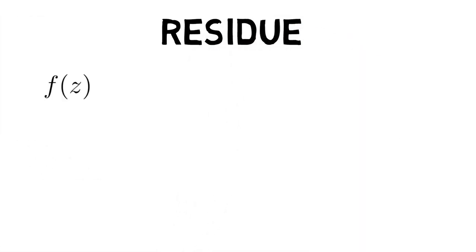Suppose f is a function which is analytic inside and on a closed contour c, except for a pole of order m at z equals z0, which lies inside c.